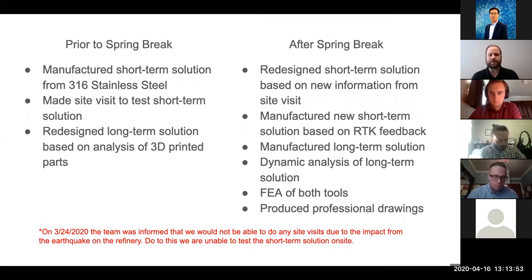After our visit to Rio Tinto right before spring break, we found out that the inspection crane and rack that we had been designing around was no longer the rack they wanted us to design around. They asked us to change our scope and move to another bay with different cranes and different setups. This required us to redesign the short-term hand tool. Since then, we've redesigned and remanufactured the short-term hand tool. We've manufactured the long-term add-on solution out of 316 stainless as well. We've done the FEA analysis on both tools and produced the professional drawings.